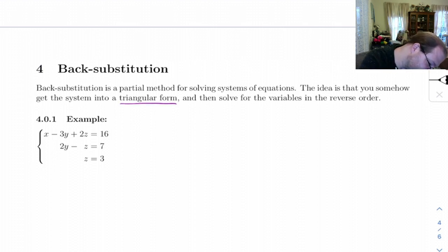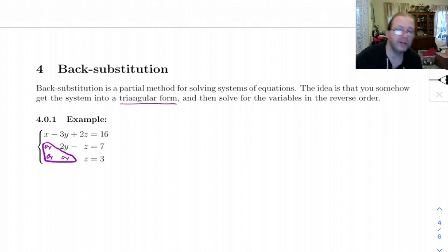but for now this is what I mean by triangular form. Over here we've got these things are missing, or if you wanted to you could put in a 0x, 0x, and a 0y. But there's that little triangular bit on the bottom where all the coefficients are zero, and that makes for a really easy system to solve.